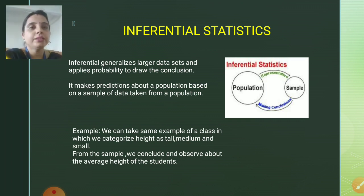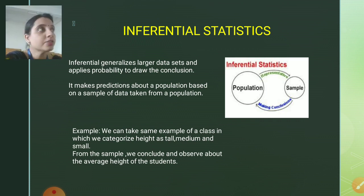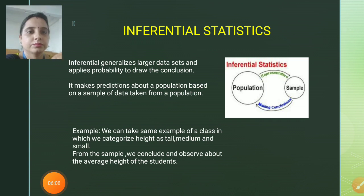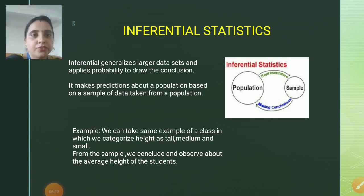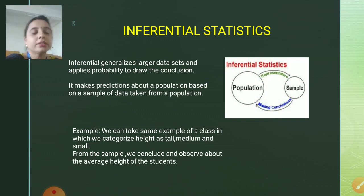Inferential statistics mainly generalizes larger datasets and applies probability to draw conclusions. It makes an assumption — probability is sort of an assumption that this would be a result considering the following data. Using the same class example, we can categorize the height as tall, medium, and small. In inferential statistics, if I have a class of 30 students, I don't have to measure the size of each and every person. By just looking at the sample, I will conclude that 5.9 will be the maximum height and 5.1 will be the minimum height.